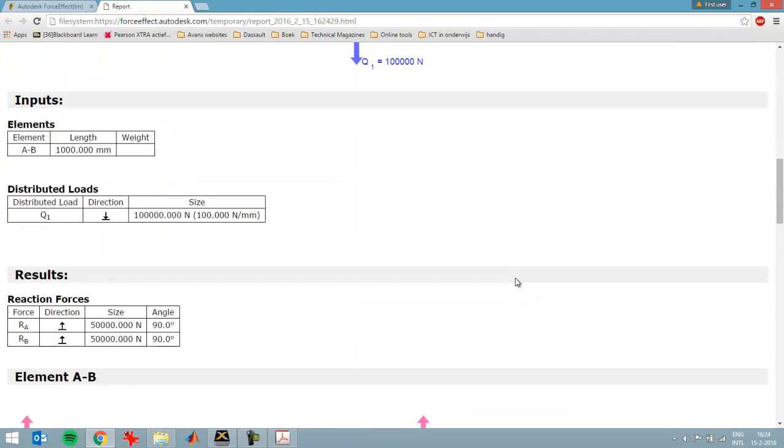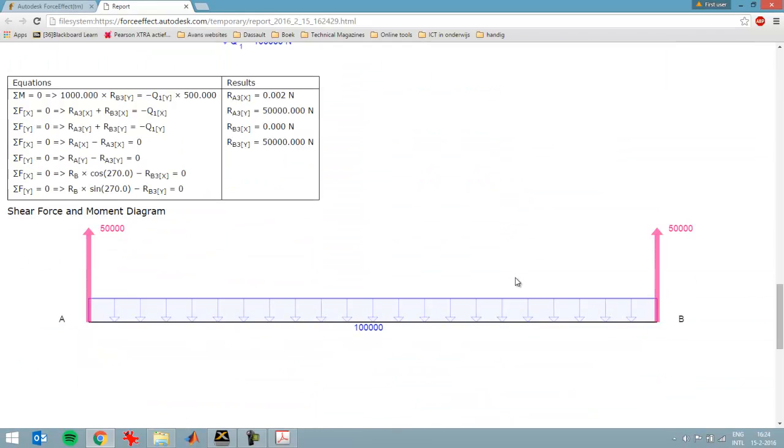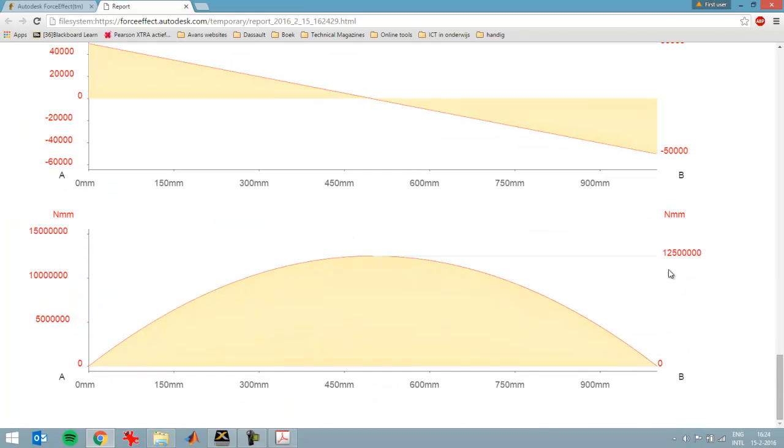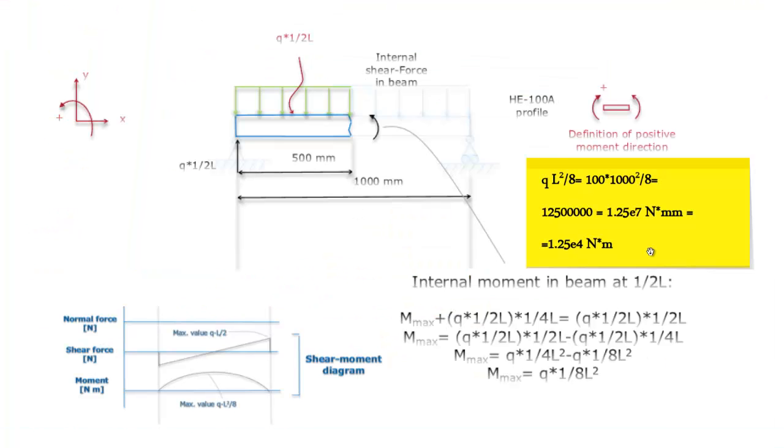Now here I get a nice report. Here I see the shear diagram, and here I see the moment diagram. The maximum value is indeed as previously calculated. It is 1.25E7. If you put the dot here, you'll have 7 characters behind the dot, so 1.25E7 N multiplied by millimeter. So never divided by millimeter, it's Newton multiplied by millimeter, and it's exactly the value that I have over here.